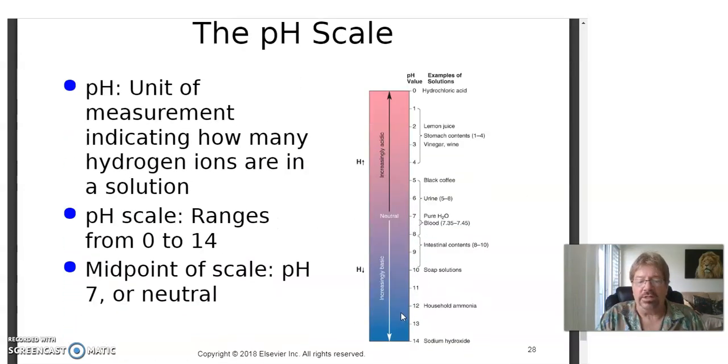And that's measured with what we call the pH scale. pH is a unit of measurement indicating how many hydrogen ions are in a solution. The more that there are, the more acidic it is. The fewer that are there, the more basic it is. The pH scale ranges from 0 to 14. Seven is neutral. Pure water is neutral. Blood is almost neutral. Hydrochloric acid, like in our stomach, is a zero. It's as strong as the battery acid of your car. Lemon juice is very strong. Vinegar is a fairly strong acid.